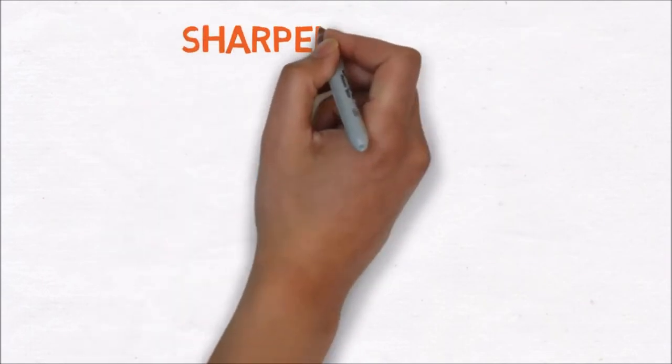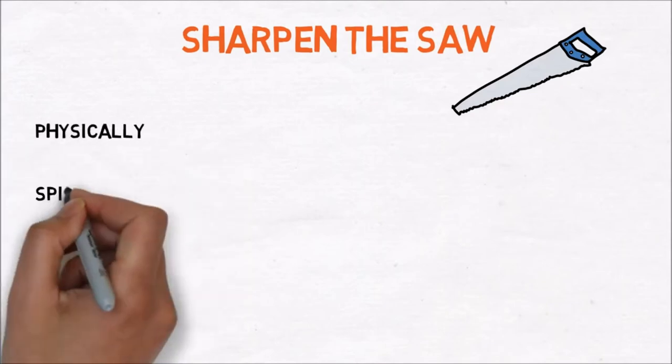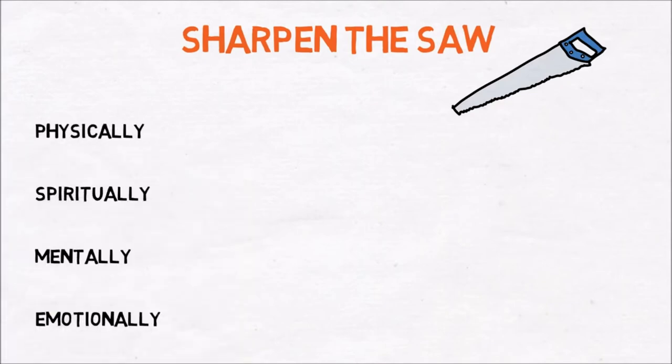The last lesson is to sharpen the saw. This means you should take time to renew yourself in a physically, spiritually, mentally and emotionally way. To renew yourself physically you should get sufficient rest, exercise on a regular basis and eat healthy foods.